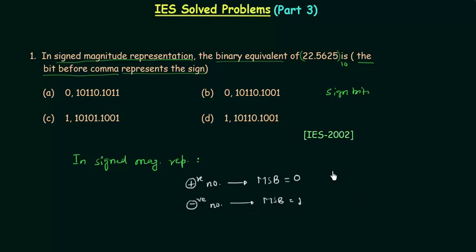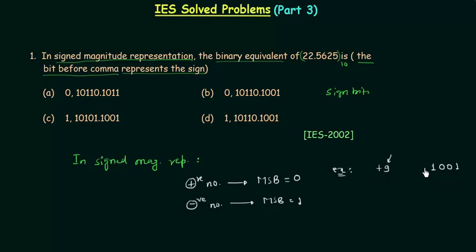Let's take one example. If we want to represent +9, the first thing we have to do is find the magnitude, which is 1001. This is how we represent 9, and to represent the sign we will make the MSB 0.